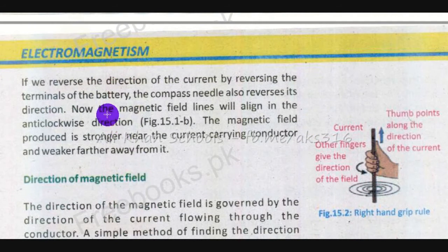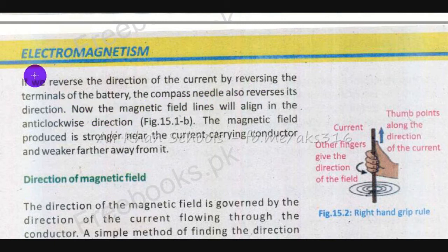If we reverse the direction of the current by reversing the terminals of the battery, the compass needle also reverses its direction. Now the magnetic field lines will align in the anti-clockwise direction.